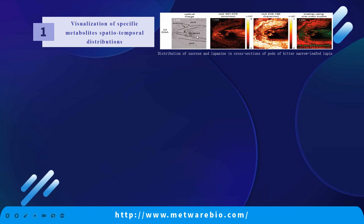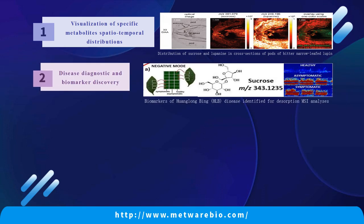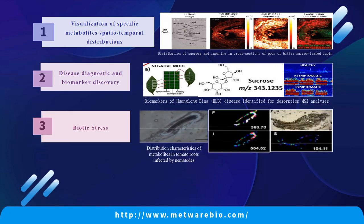In addition, spatially resolved metabolomics can also be used in plant disease biomarker studies. For example, the HLB — Huanglongbing disease — study. Huanglongbing disease affects citrus severely and can cause spots and degeneration on the fruit surface. Spatially resolved metabolomics analysis of citrus could reveal the markers of Huanglongbing disease. It can also be applied to biotic stress to understand how plants defend themselves. The paper on the right is a study of nematodes infecting plants, using spatially resolved metabolomics to detect and describe the distribution of endogenous peptides and secondary metabolites induced by nematodes, helping understand how plants resist nematodes to achieve protection.